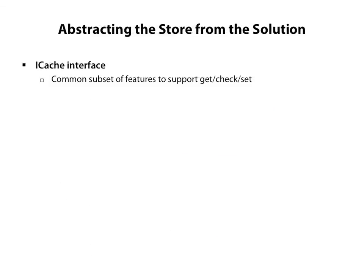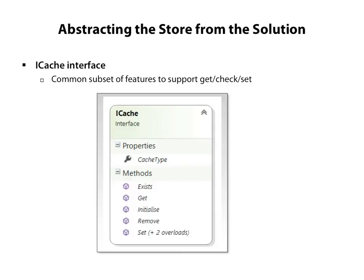For different types of cache store, the pattern is the same as we've already seen. You need to be able to get from the cache, check if something's there, and set objects in the cache. All the caches we'll use support the notion that an object can expire and take care of removing it from the cache store when it has expired. In our generic AOP framework, we can allocate items to different caches in code with our cache attribute, or at runtime with configuration. In order to do that, the framework needs to treat all caches in the same way, which is why we have the iCache interface.